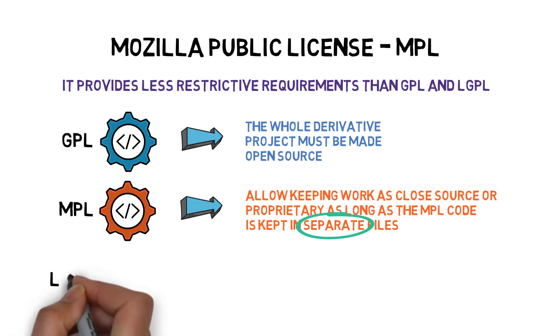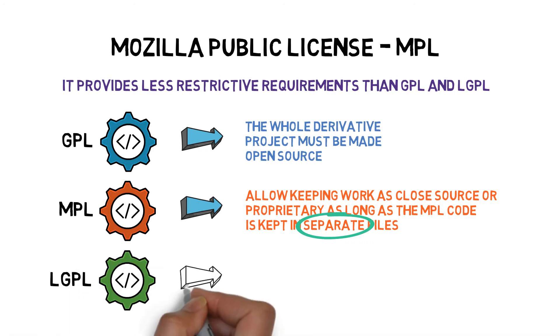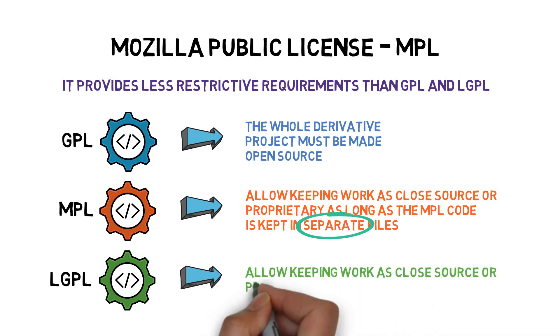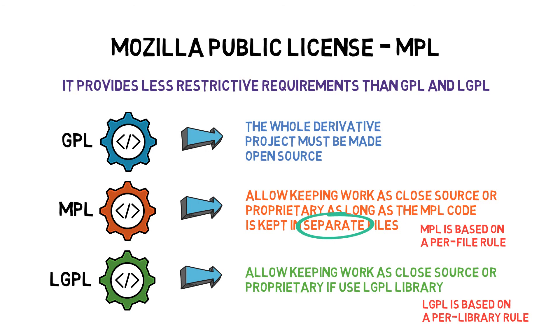In comparison to the LGPL license which is based on a per-library rule, MPL is based on a per-file copyleft rule, which means any file that does not include MPL material can be kept as closed-source.